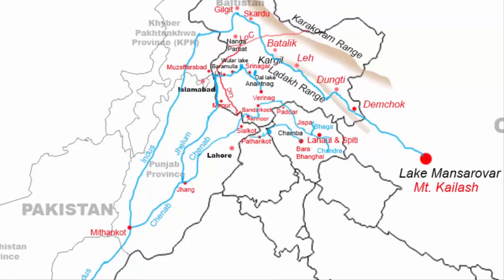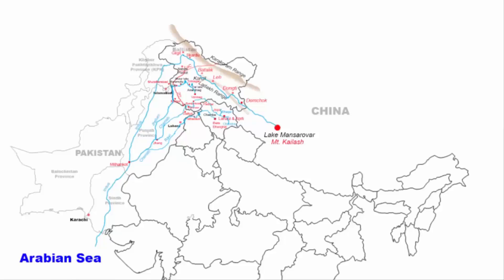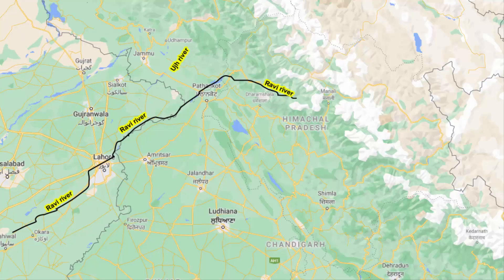The river continues to flow southwest and reaches the India-Pakistan border, flowing along it for approximately 100 km. It then enters the city of Lahore, and from there flows southwest for about 280 to 300 km to join river Chenab, which then joins river Indus at Methankot in Pakistan, eventually draining into the Arabian Sea. The Uj river is a tributary of Ravi that flows through Kathua district in the Indian Union Territory of Jammu and Kashmir.